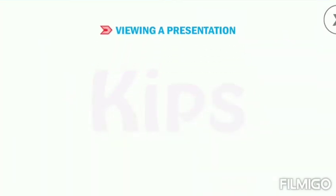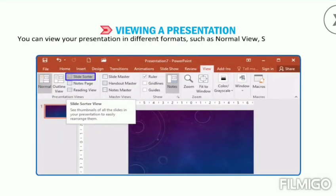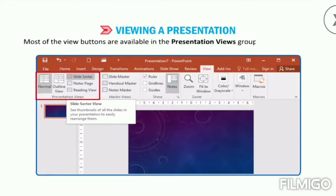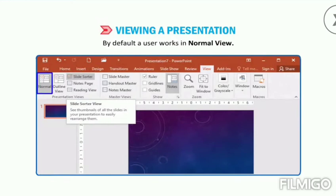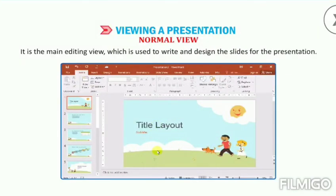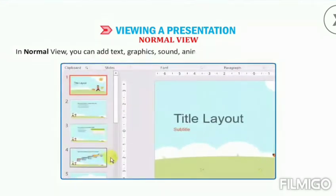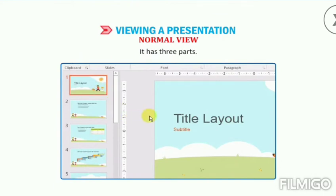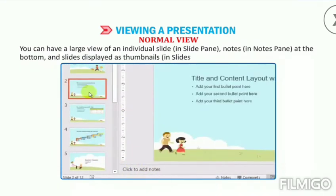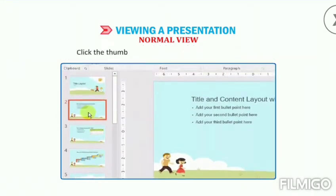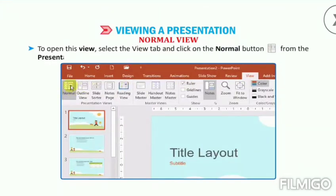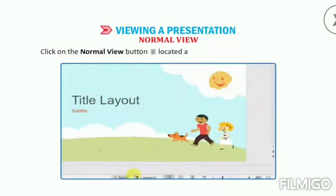You can view your presentation in different formats such as Normal view, Slide Sorter view, and Slide Show view depending on the task at hand. Most of the view buttons are available in the Presentation Views group on the View tab. By default, a user works in Normal view. Normal view is the main editing view used to write and design the slides. In Normal view, you can add text, graphics, sound, animation and other effects to your slides. It has three parts: a large view of an individual slide in the Slide pane, notes in the Notes pane at the bottom, and slides displayed as thumbnails in the Slide Navigation pane. To open this view, select the View tab and click on the Normal button from the Presentation Views group, or click on the Normal View button located at the bottom of the slide window.